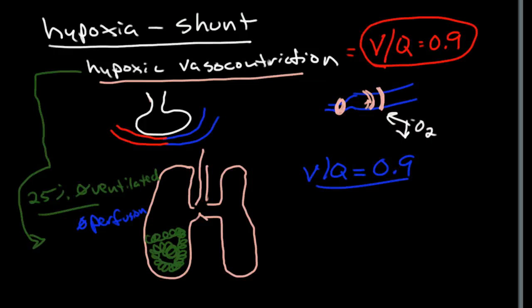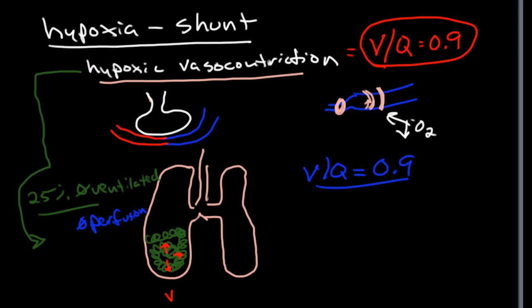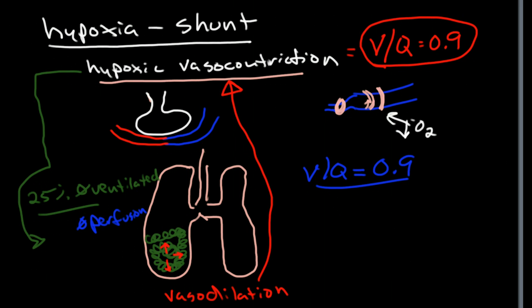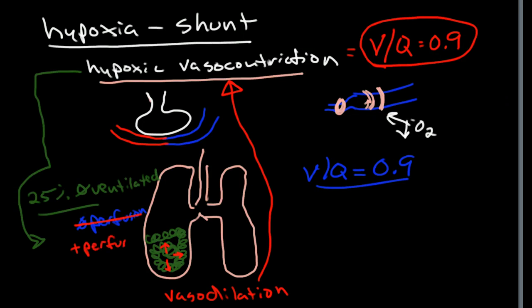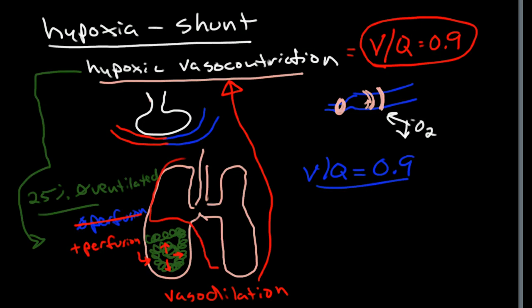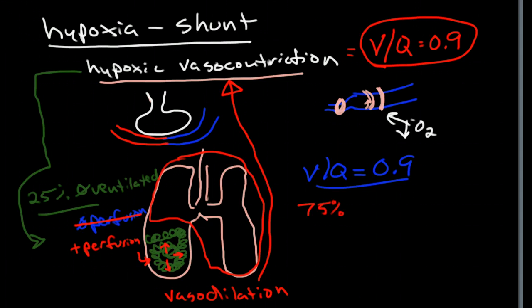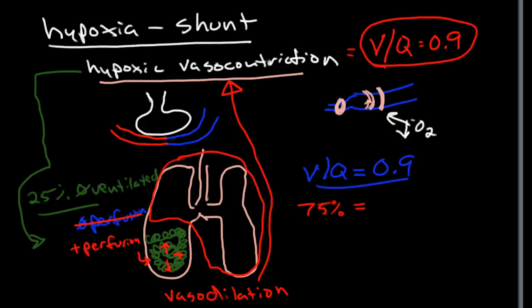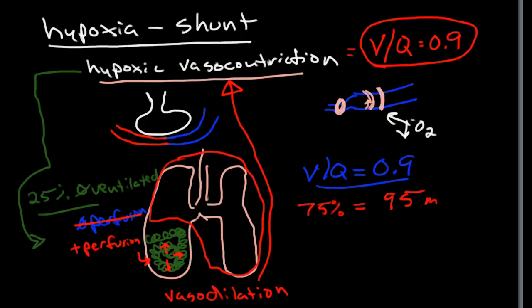But what happens with pneumonia is that we have inflammatory mediators from the infection. The release of prostaglandins and histamine causes vasodilation. That vasodilation counteracts the process of vasoconstriction, and therefore we get perfusion to the unventilated area of the lung. Now, the other 75% of the lung that is ventilated and perfused very well — the blood flowing through that healthy lung is being oxygenated with a partial pressure of oxygen around 95 mmHg.